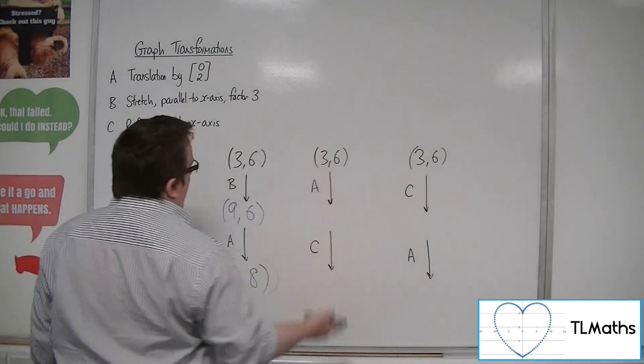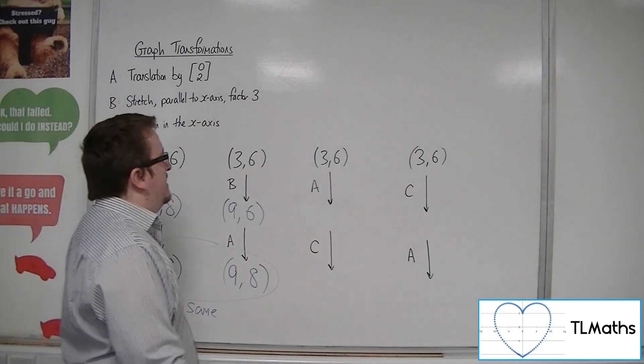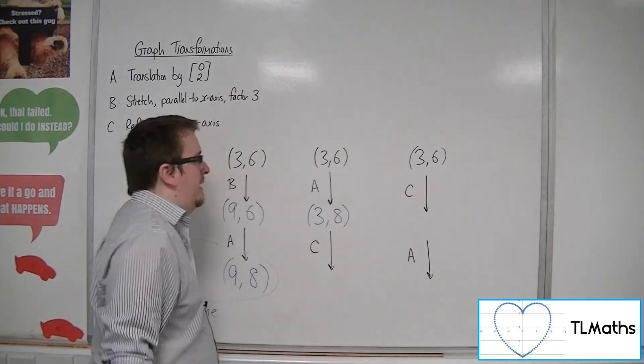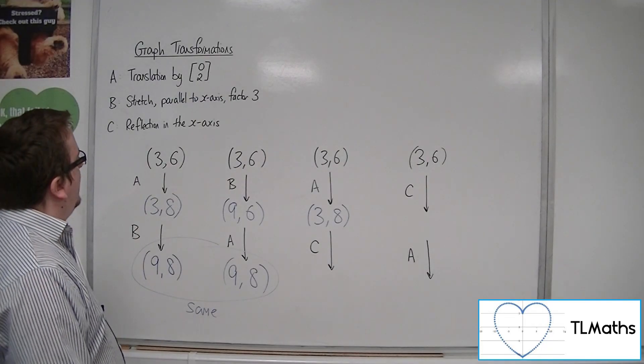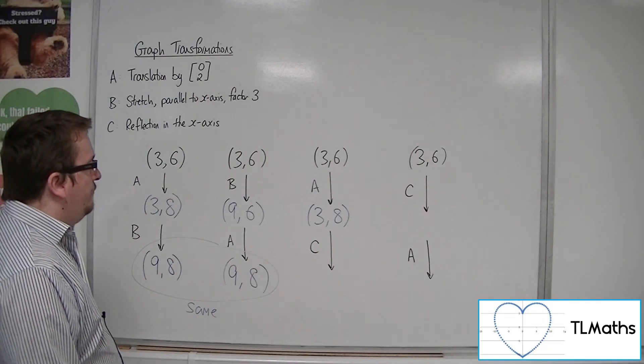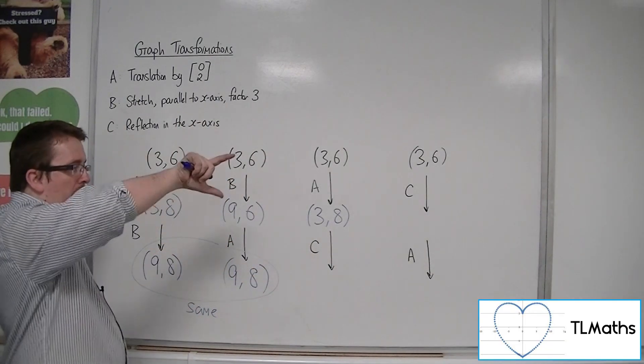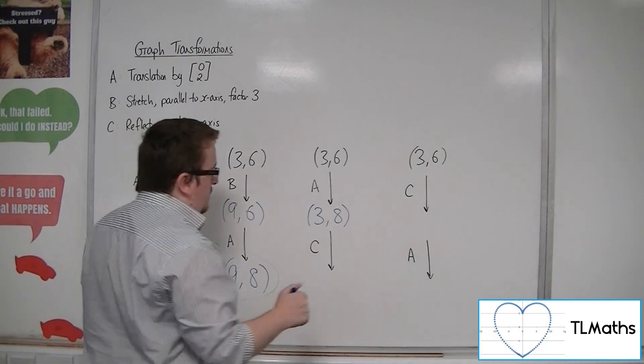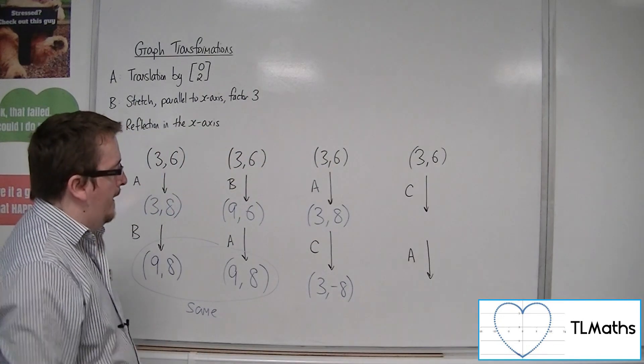Now, let's try A and C. So, A, translation by the vector (0, 2). So, we would then have (3, 8), moving it two units up. And then a reflection in the x-axis. So, reflection in the x-axis will change the y-coordinate from 8 to minus 8. So, we'd have (3, -8).